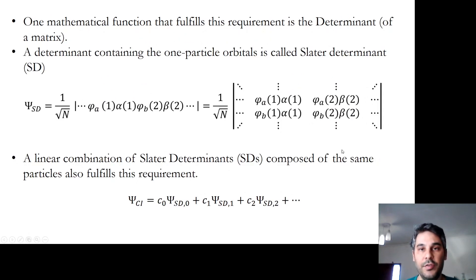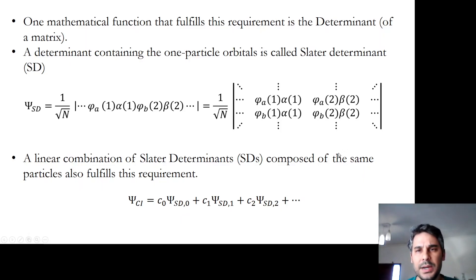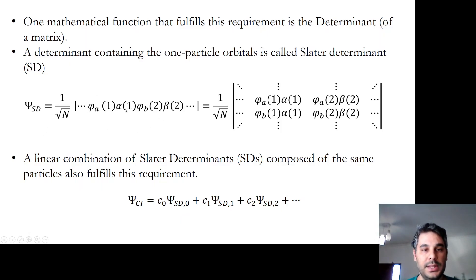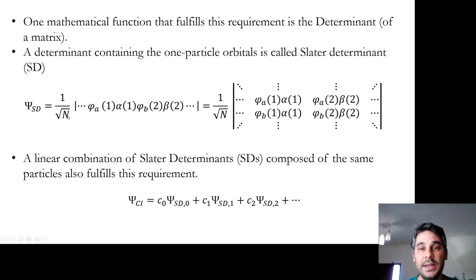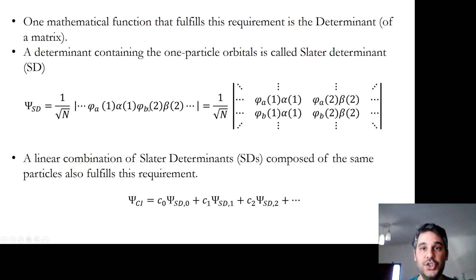One mathematical function that fulfills the requirement of being anti-symmetric is the determinant of a matrix. A determinant containing the one-particle orbitals is called the Slater determinant, SD. In this notation, the different orbitals are listed one after the other between two vertical bars. There is a 1 over square root of n normalization factor, where n is the number of spin orbitals in the Slater determinant.